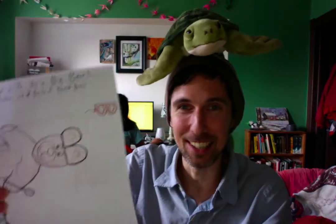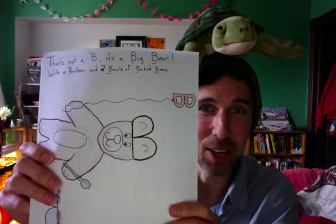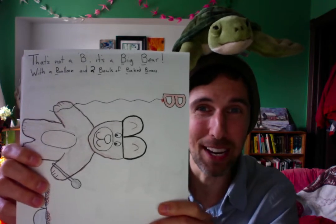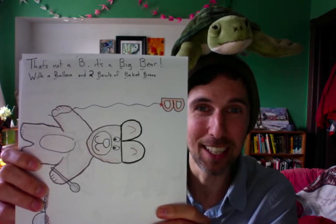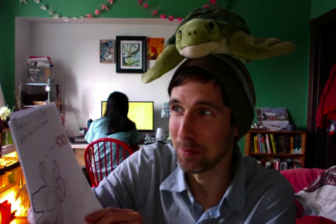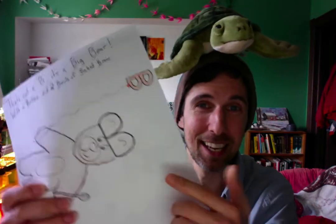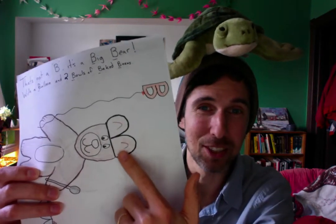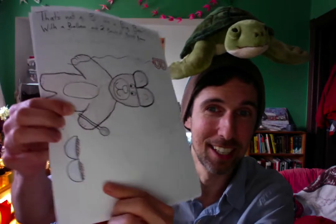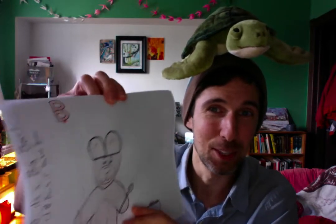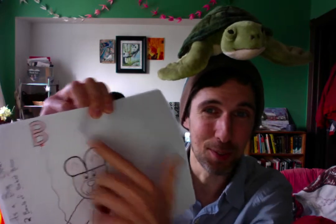And then there's this one — that's not a B, it's a big bear with a balloon and two bowls of baked beans. And you can see the B is actually the bear's ears. And then here's another B, and that's actually the beans. And then the balloon is also a B.